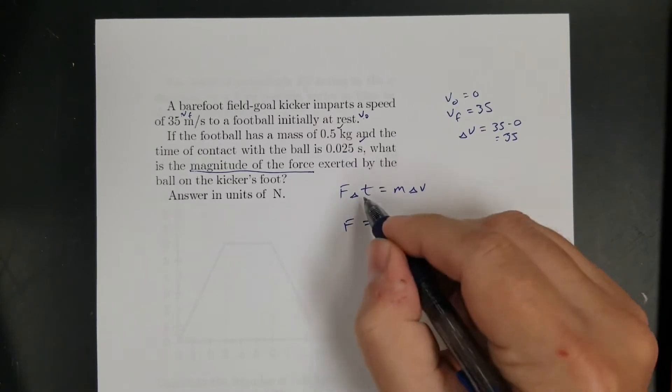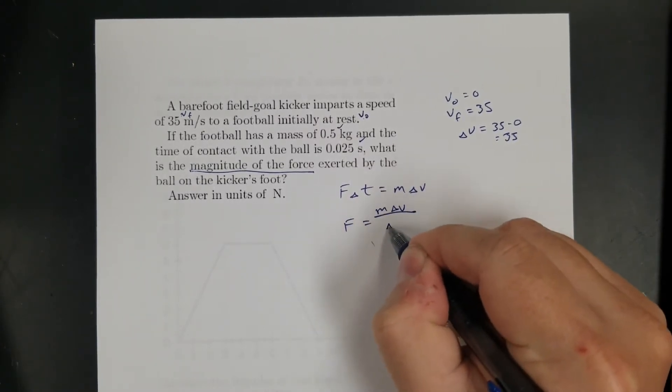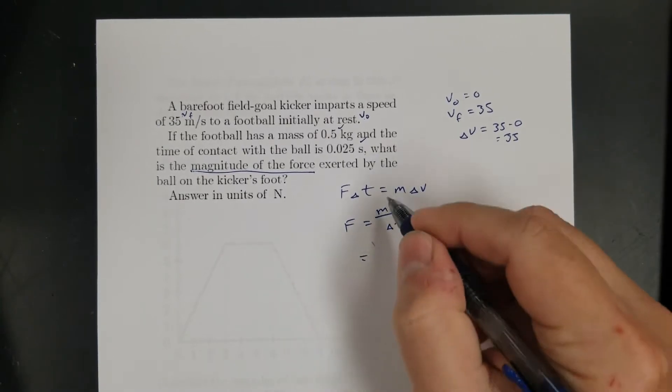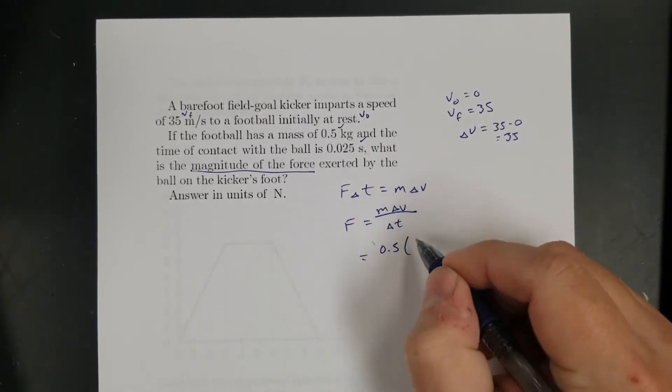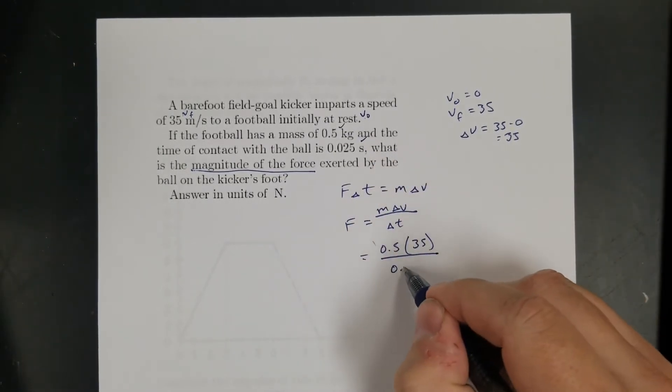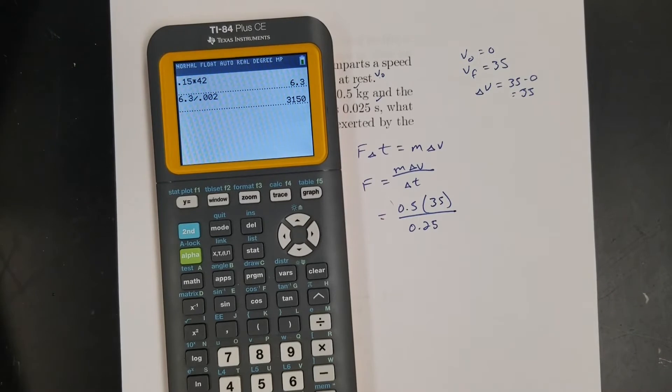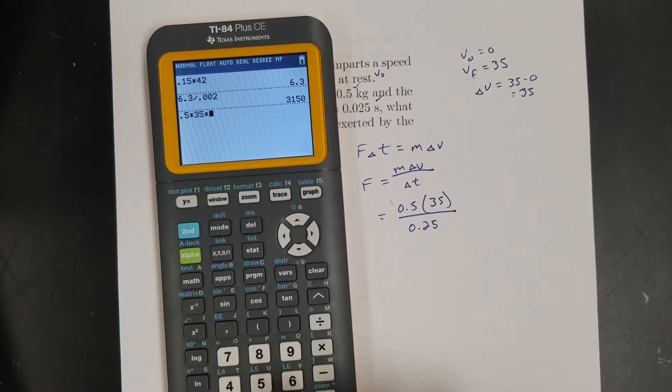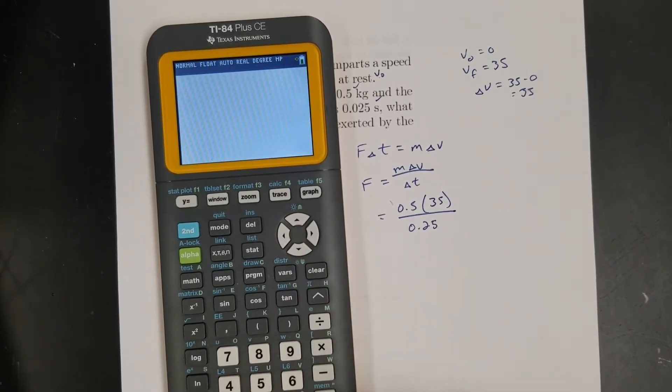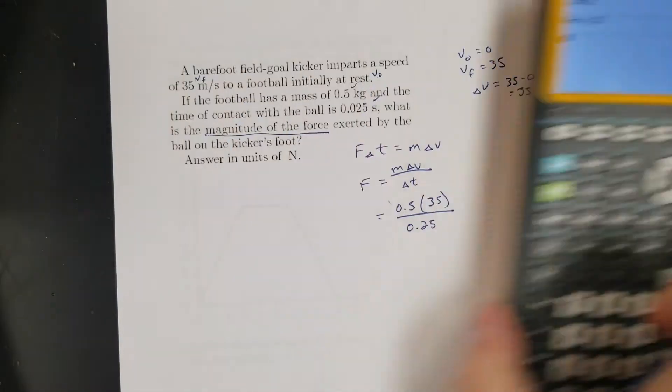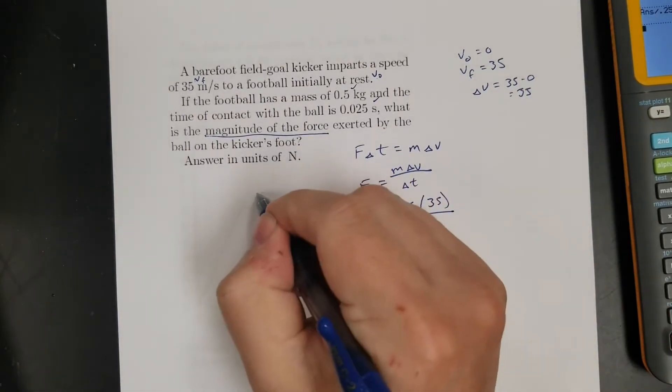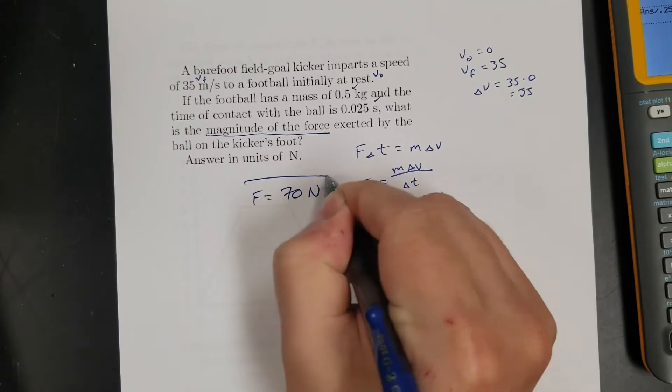Okay, so just divide time over. So that's m delta v divided by time, and now I can solve. So that's mass of 0.5 times my change in velocity, which is 35, divided by my time, 0.025. So let's do that. So 0.5 times 35 times 0.25. No, I'm dumb. 0.5 times 35, enter, divided by 0.25. 70. All right, I do that right? Yeah. I usually make stupid mistakes like that. So the force is 70 newtons.